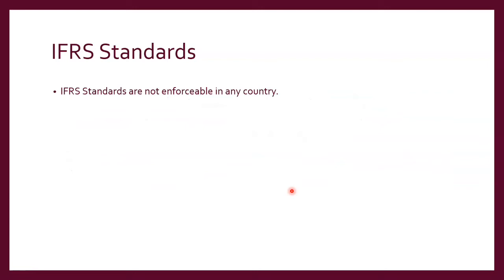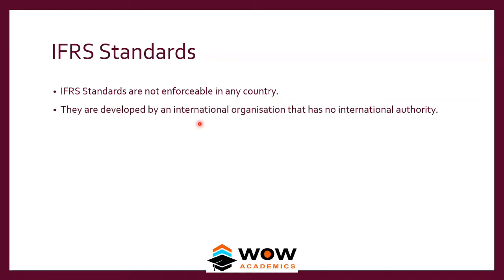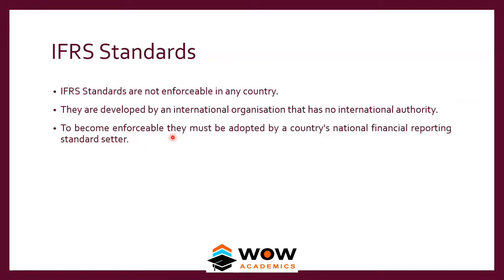What is unique about IFRS? IFRS are not enforceable in any country because they are a global standard — countries will not accept them so quickly. They are developed by an international organization that has no international authority. To become enforceable, IFRS must be adopted by a country's national financial reporting standard setter. For example, if IFRS has to be followed mandatorily in India, it is ICAI — the Institute of Chartered Accountants of India — who must approve and allow it.